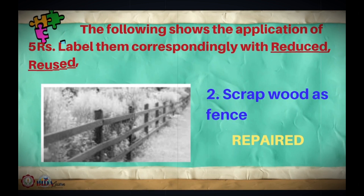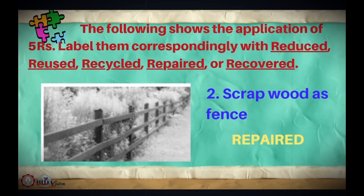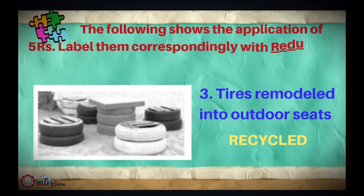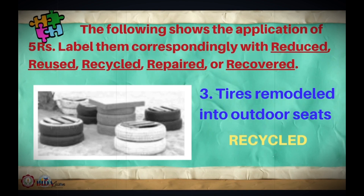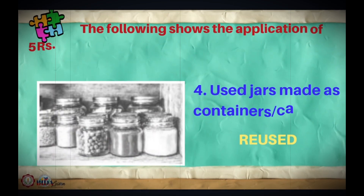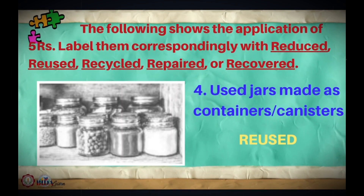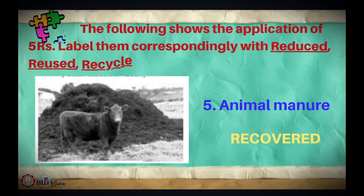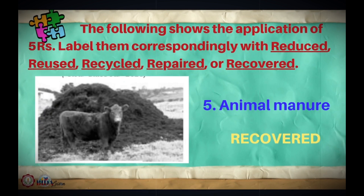Picture number 2 — scrap wood used as a fence. Yes, that's repair. Picture number 3 — tires remodeled into outdoor seats. It's recycled. Number 4 — used jars made as containers and canisters. And for the last one, number 5 — animal manure. Correct, it's recovered.